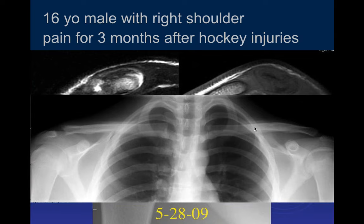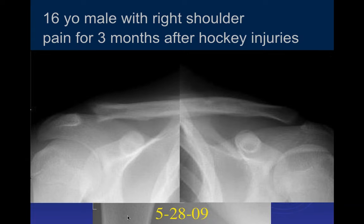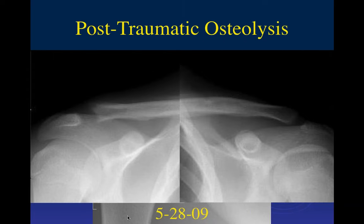Compared to the other side, we're seeing osseous loss with more distinct margins, but still some changes — versus the normal side which looks pretty good. Given trauma three months ago, this could be post-traumatic osteolysis. It's actually a traumatic injury to the subchondral bone at the distal aspect of the clavicle, but the term used is post-traumatic osteolysis.